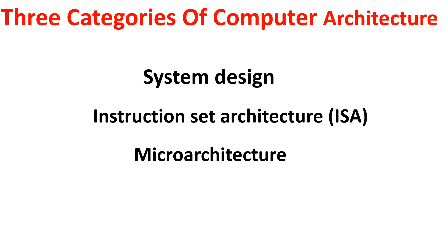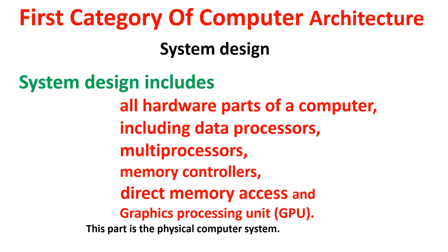Now, we will discuss three categories of computer architecture. The first category is system design. The second category is ISA, which is Instruction Set Architecture. And the third is micro architecture.